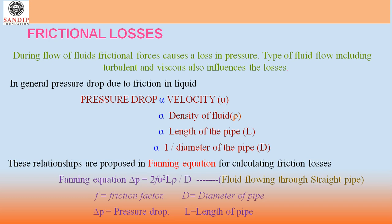These relationships are proposed in the Fanning equation for calculating frictional losses. The Fanning equation is: ΔP = 2Fu²Lρ/D. This equation is used for fluid flowing through a straight pipe, where F is the friction factor, D is the diameter of the pipe, ΔP is the pressure drop, and L is the length of the pipe.